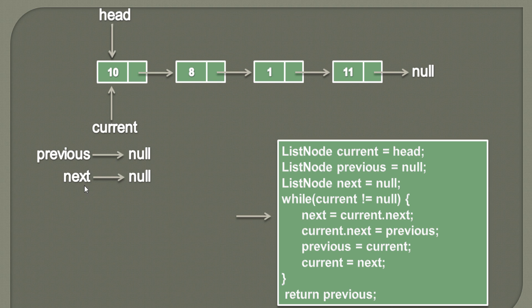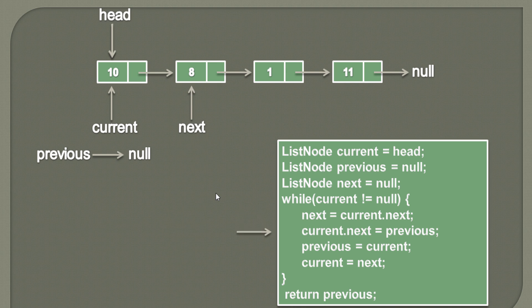We see that next points to null, so we'll assign current's next node to it. Since current points to the first node and its next points to the second node, we assign current.next to the next variable. Then we'll take current.next, which points to the second node, and break that pointer by assigning null to it — so current.next now becomes null.